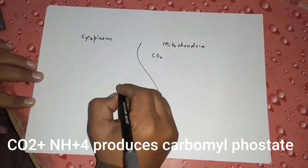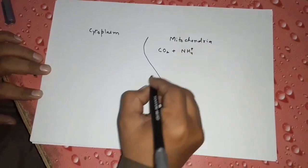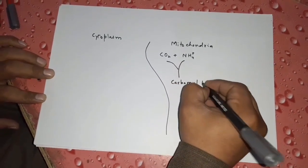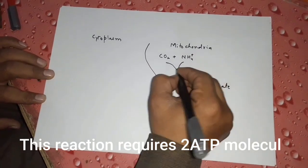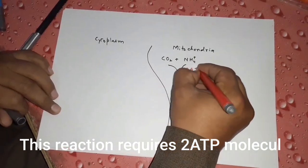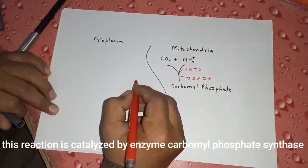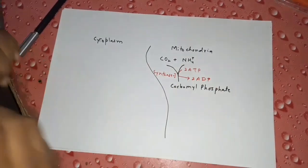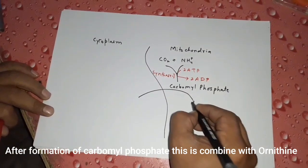The urea cycle starts in the mitochondria, where carbon dioxide produced from cellular respiration combines with ammonia. These two are converted into carbamoyl phosphate. In this reaction, two ATPs are consumed.